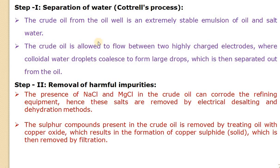Harmful impurities like sodium chloride and magnesium chloride can cause corrosion of equipment and can be simply removed by dehydration methods and desalting. The next important harmful impurity is sulfur, which can be treated with copper oxide, and the resulting copper sulfide can be separated by filtration.